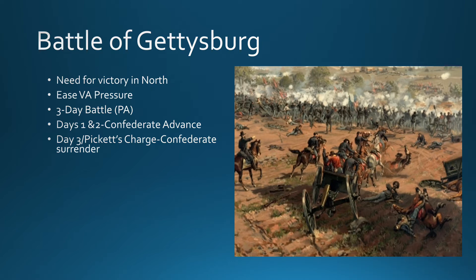On the third day, Lee decides to charge in what is known as Pickett's Charge. This decision is a disaster. In less than an hour, Lee's men suffer about 6,500 casualties. With those losses and the losses from the previous days, the Confederacy is forced to surrender. The Union picks up its biggest victory up to this point, with over 50,000 total casualties — about 28,000 for Lee, roughly a third of his command, and about 23,000 for the Union. This makes Gettysburg the deadliest battle in U.S. history.